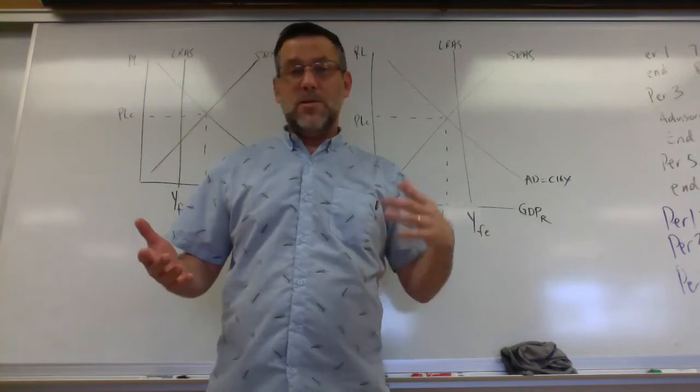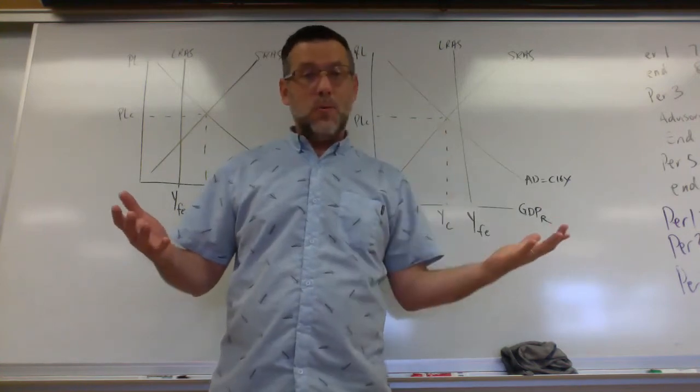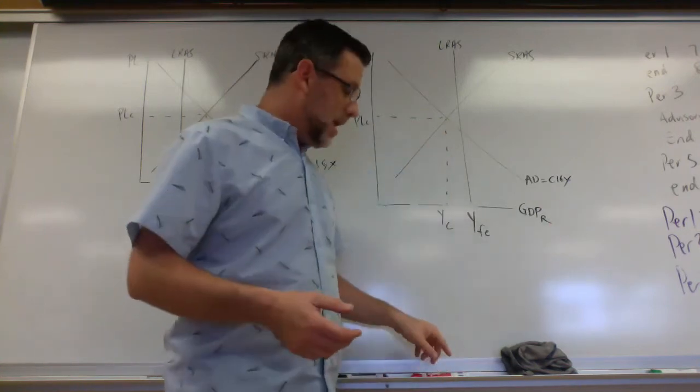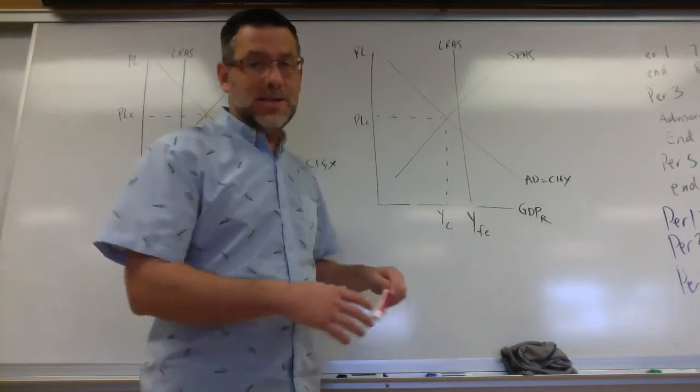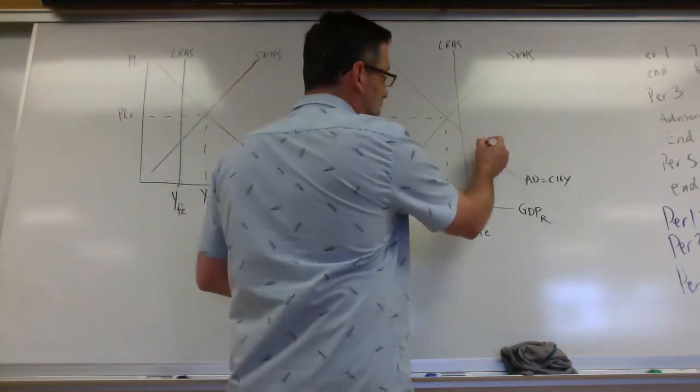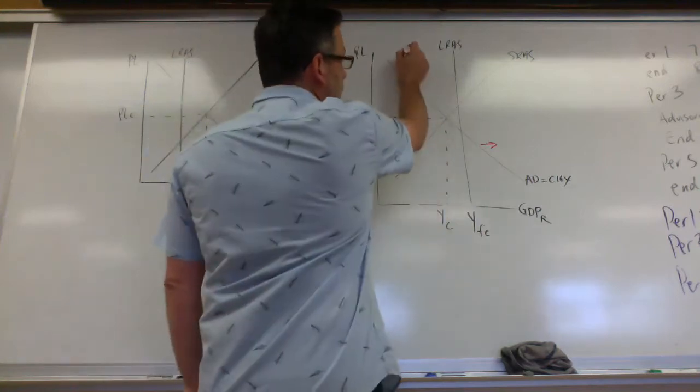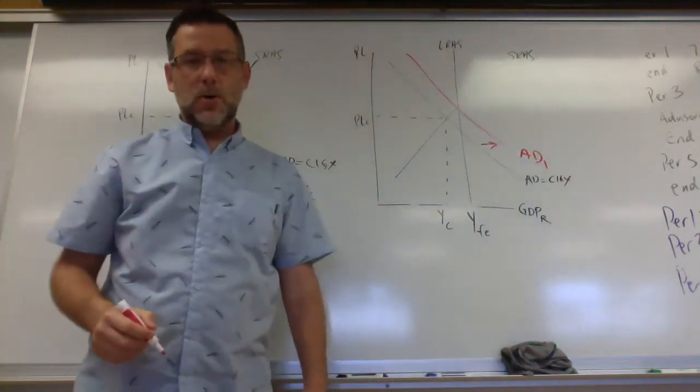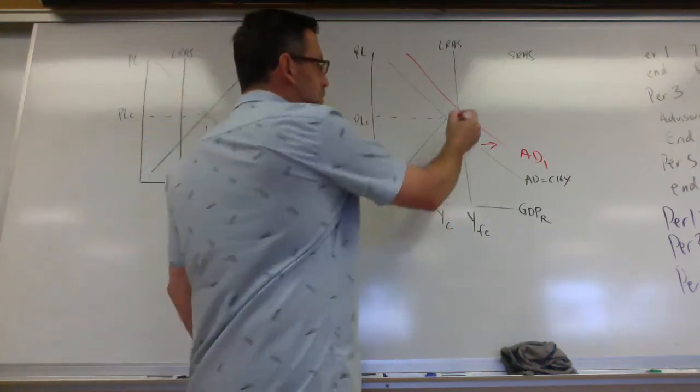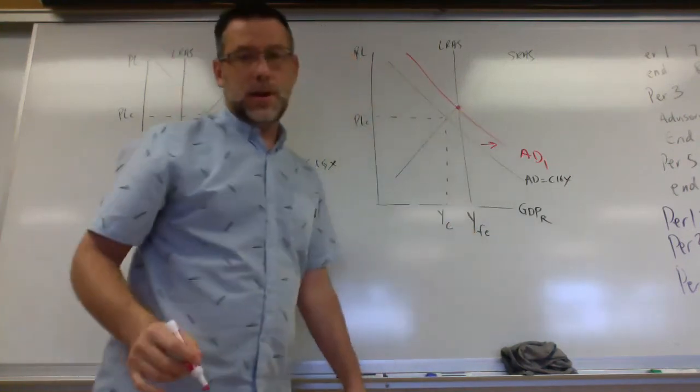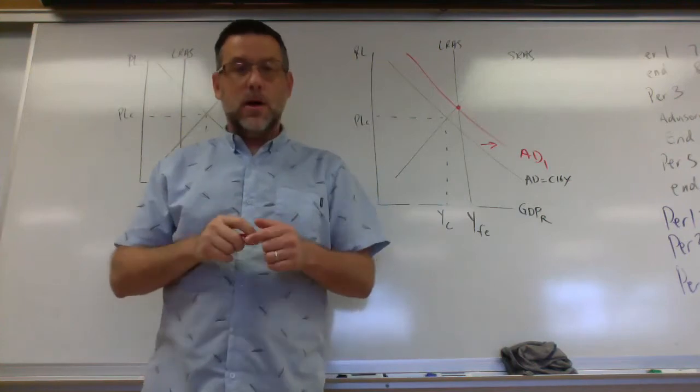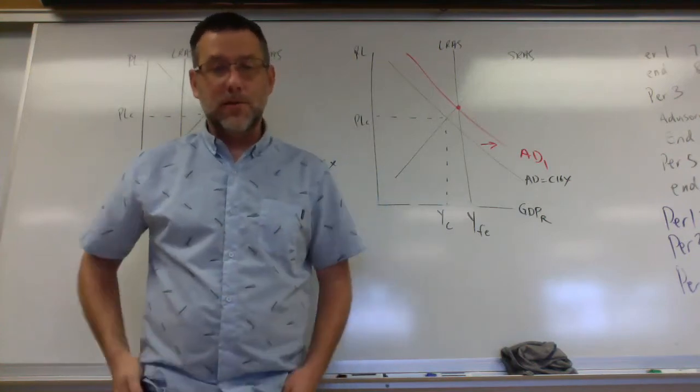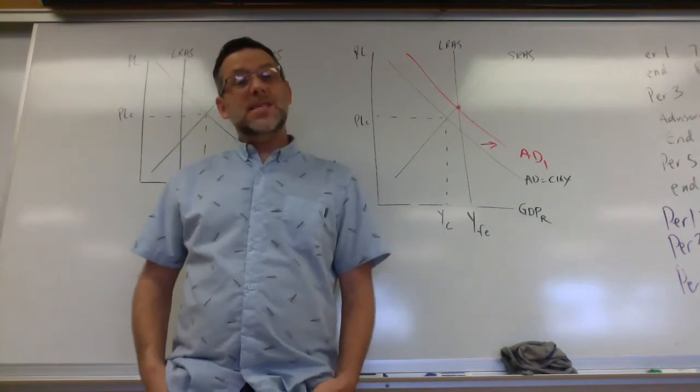Either way, whether they cut taxes or whether they increase government spending, either one of those would increase aggregate demand. So we get an arrow to the right, aggregate demand is increasing. Shift our curve. There we go. Increasing aggregate demand puts us back at full employment. So we're back at that long run aggregate supply curve. We're back at full employment.